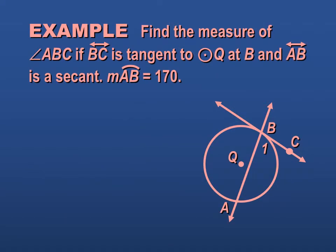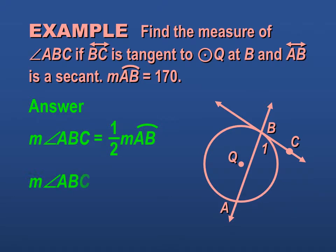We want to find the measure of angle ABC. We have a tangent and secant right there. And we know that the measure of arc AB is 170. So in order to find the measure of ABC and the measure of angle one, we have to take half of 170, which gives us 85.